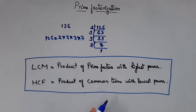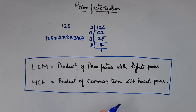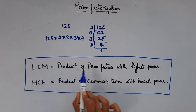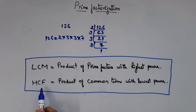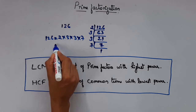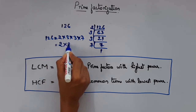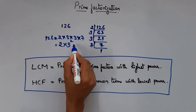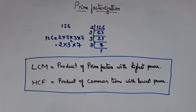Now what is the use of prime factorization? It is used to find LCM and HCF of given numbers. LCM is given by the product of prime factors with the highest power. HCF is given by the product of common terms with the lowest power. In terms of powers, 126 is 2 into 3 power 2 into 7.